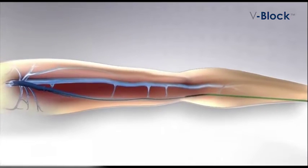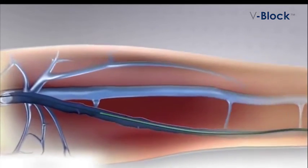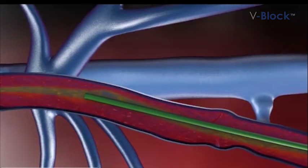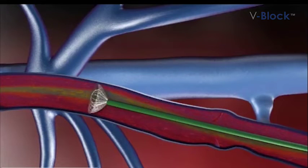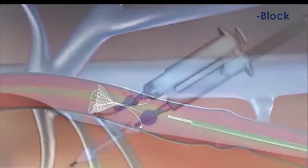A six French double lumen sheath is then advanced over the guide wire, and its distal tip is positioned two centimeters below the saphenofemoral junction. The v-block safety plug, which is designed to block the blood flow, is then positioned at the end of the sheath and deployed. Its proper position is confirmed with ultrasound.